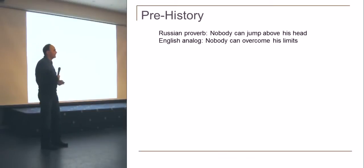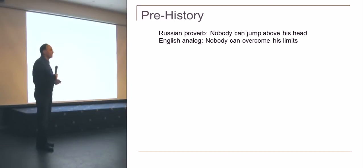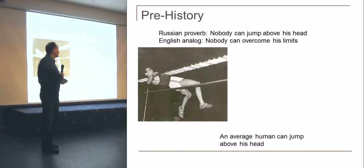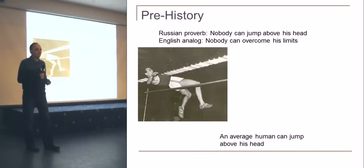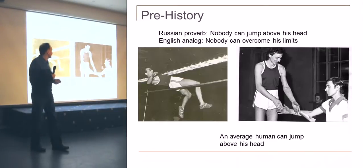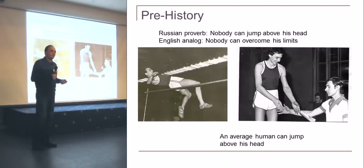This work started about 40 years ago as student experimental work. The idea was to check the Russian proverb: nobody can jump above his head. The English analog is something like nobody can overcome his limits. After several years of hard experiments, it was experimentally demonstrated that an average human can indeed jump above his head. Some junior scientist awards were given for this result. However, it was only a polluted result.